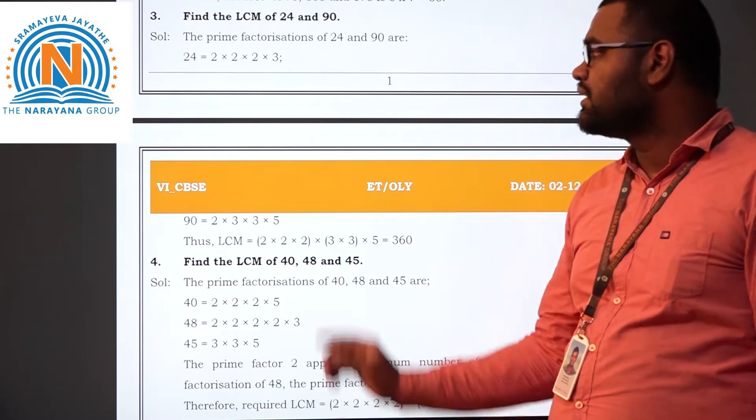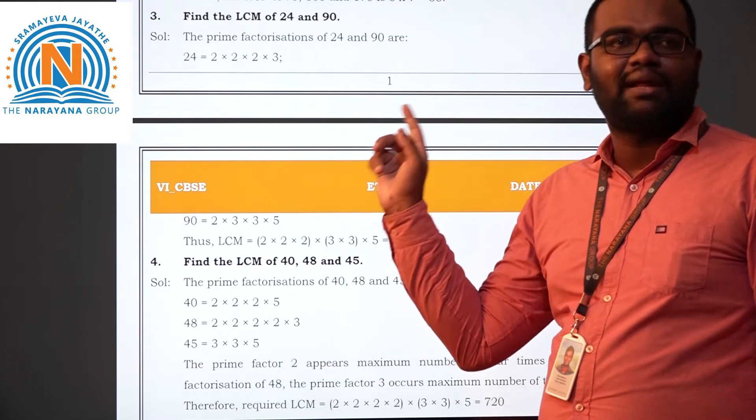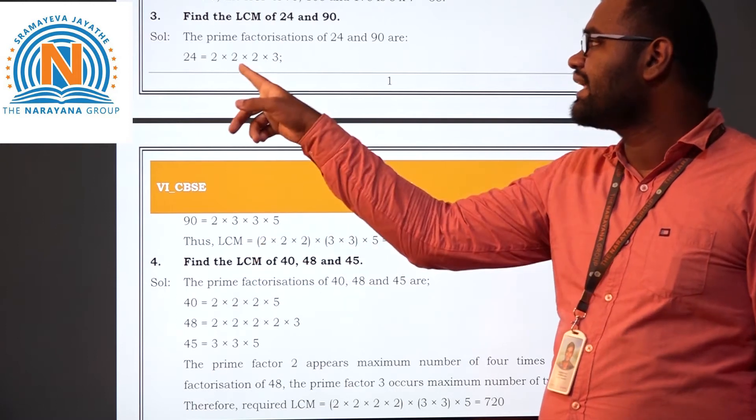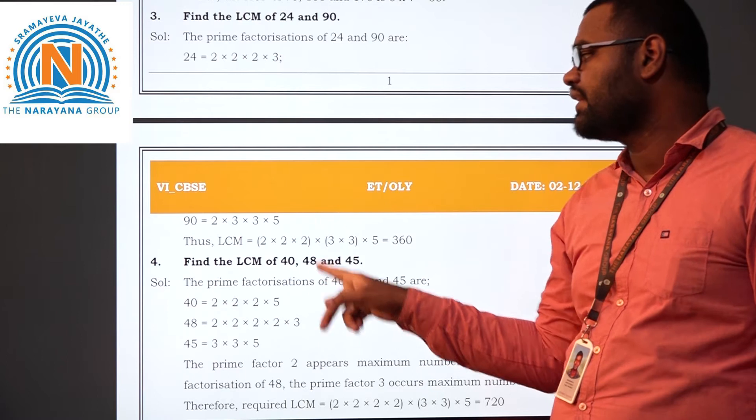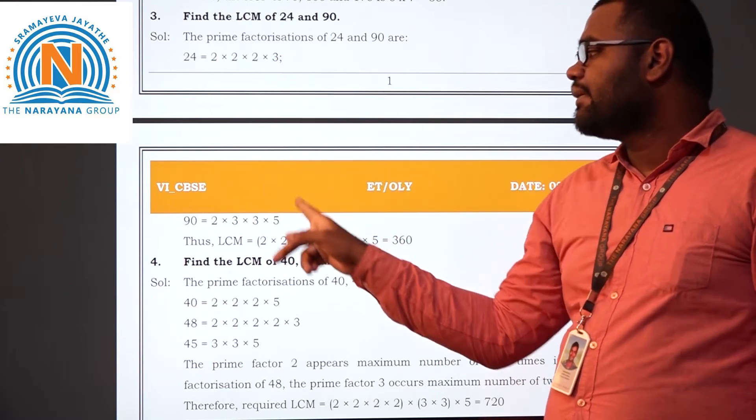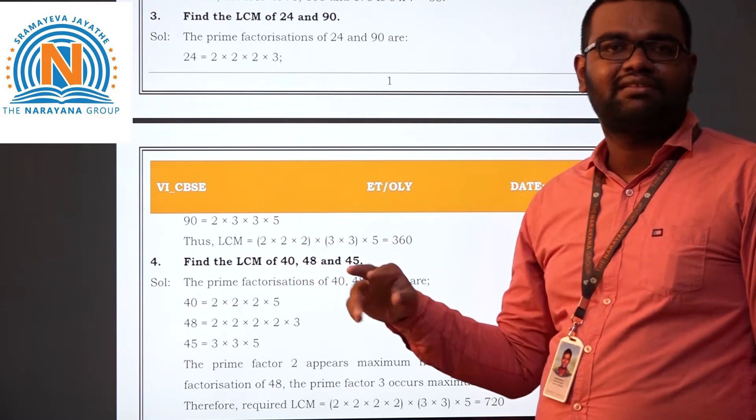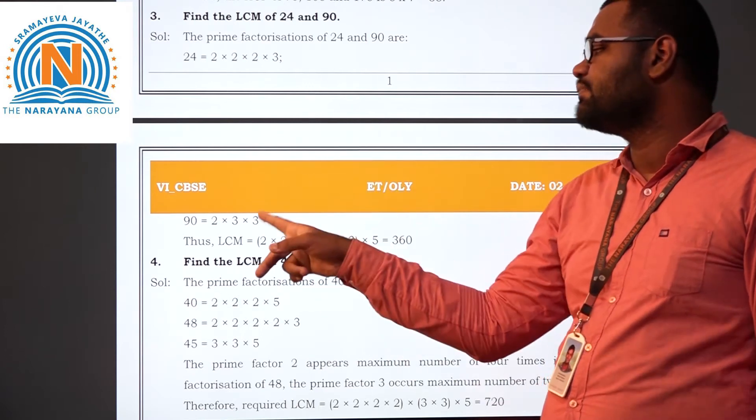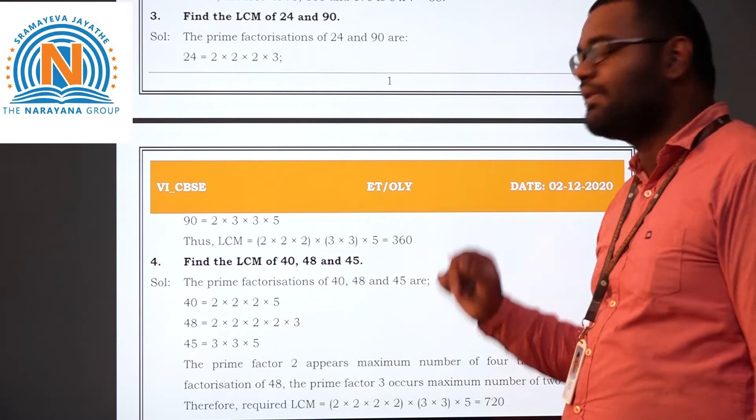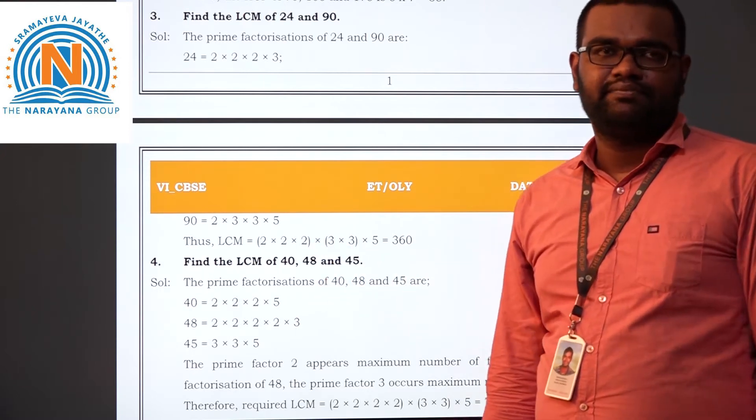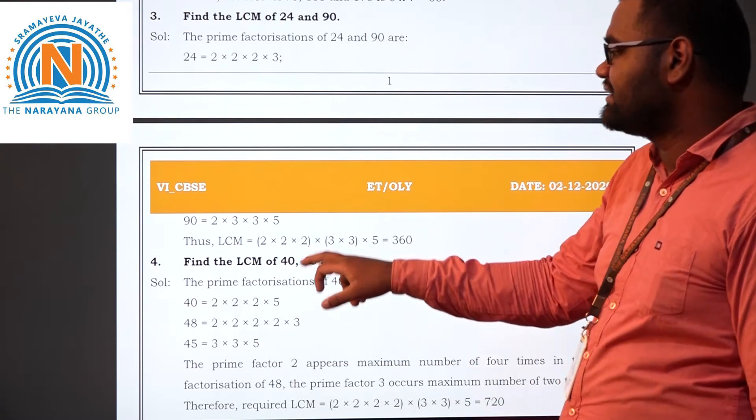Again I am repeating students. Which is present most number of times: 2. Here also 2 is there. You have to do it. Which is present most number of times. Here only 3 times, that we have to take. And again next one is 3. Present repeatedly present, it is 2 times. Count is more. Here it is less. So which is more count, that alone you have to take. And 5 it is present 1 time. If you multiply you will get 360. LCM you will get it as 360.